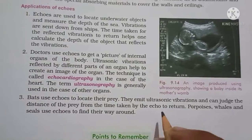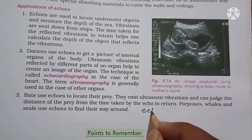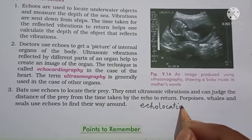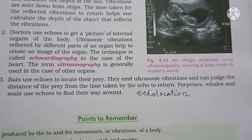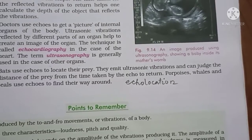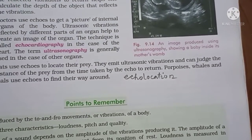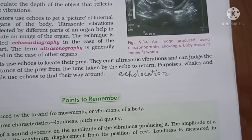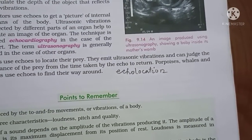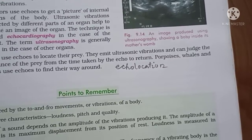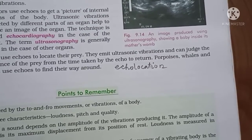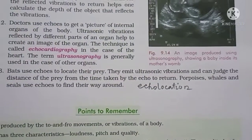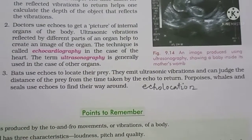This method is called echolocation. Bats search for their prey by the method of echolocation — flying in the darkness of night without colliding with other objects or obstacles by the method of echolocation.